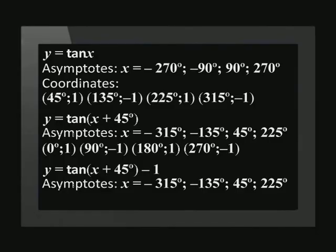The value of q in this equation is -1. This means the graph has shifted one unit down, so we must subtract 1 from each y-coordinate. Our final